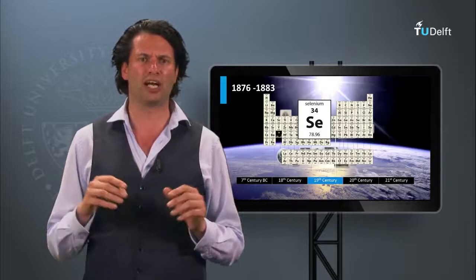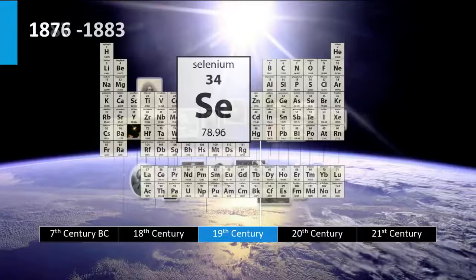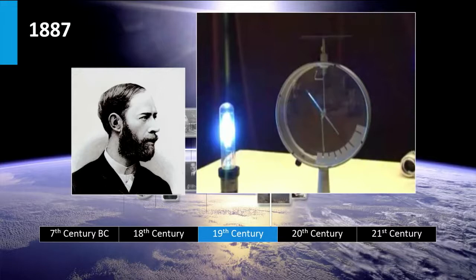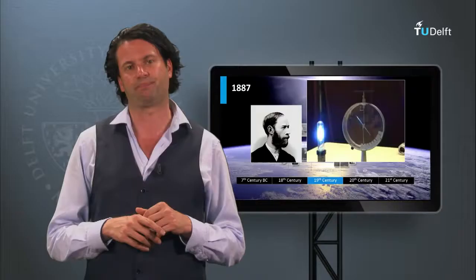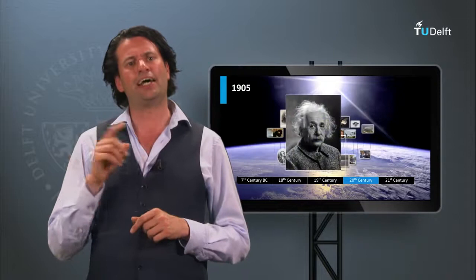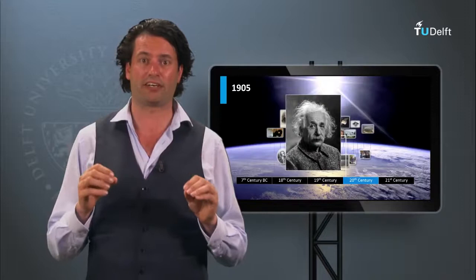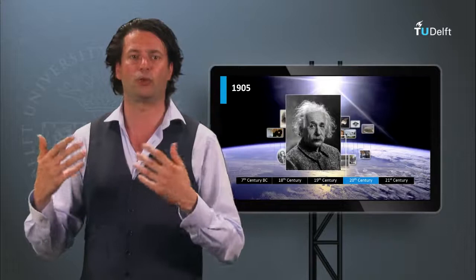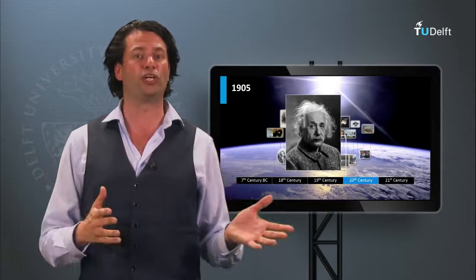In 1887 Hertz discovered the photoelectric effect, which is the effect that some charged objects, when exposed to ultraviolet light, lose their charge faster. In 1905 Albert Einstein published a paper in which he explained the photoelectric effect, assuming that light energy is carried in quantized packages of energy. Nowadays we call these packages photons, which we will discuss later this week in great detail. For this paper Einstein received the Nobel Prize in 1921.